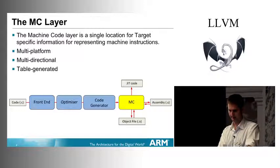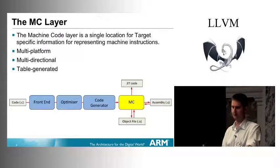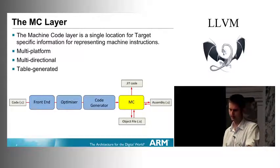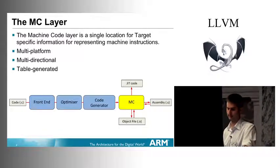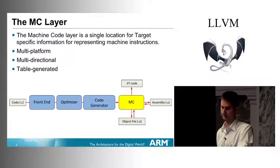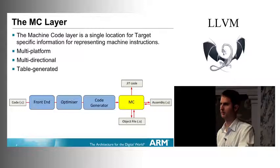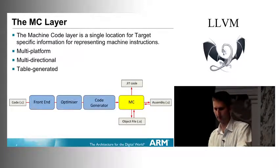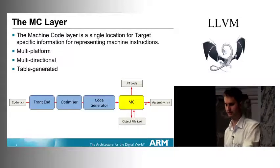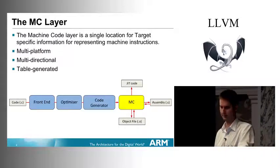MC is multi-platform — it has an MC version for each platform you're targeting. It's multi-directional as well, so it can go from assembly to object code for an assembler and the reverse for a disassembler. And it's all generated from tables, which you will see some of later, and they're particularly unpleasant.